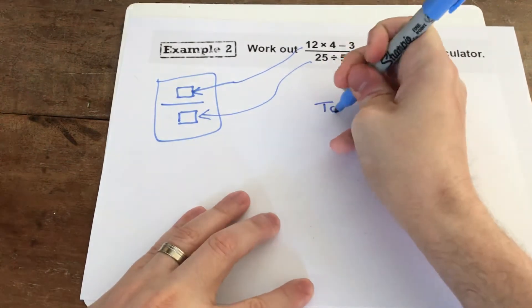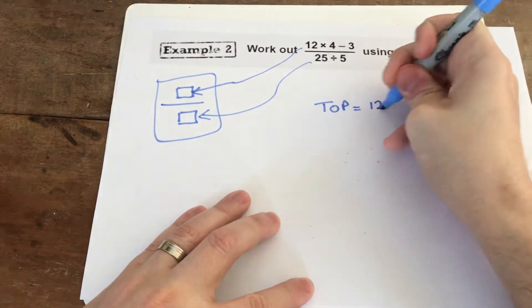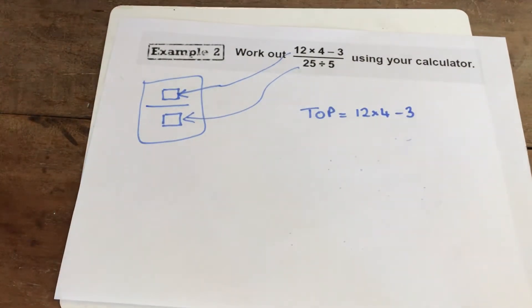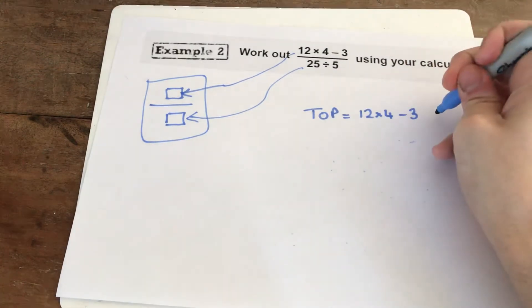Alternatively, what we would do is we'd work out our top line. So we would go 12 times 4 minus 3 and put that into our calculator. Well, 12 times 4 is 48. Take away 3 is 45.